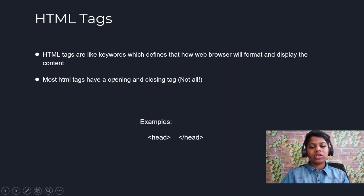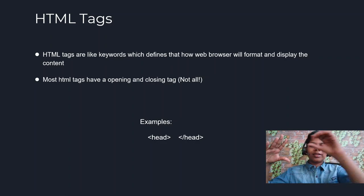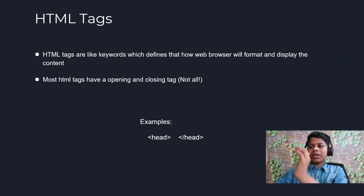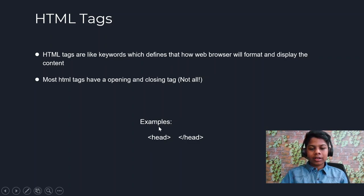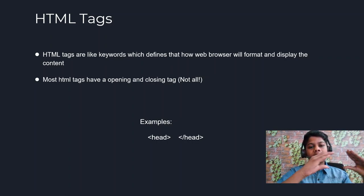Most HTML tags have an opening and a closing tag. It means it'll start here, end here, and inside that the content will be. For example, the title tag will show the title of the web page and then it'll close. So the starting tag — in this case the head tag — and this is the ending tag. In the middle we type what we want in the head of the web page. That's an HTML tag, just like a container which defines how the web browser will format and display content.